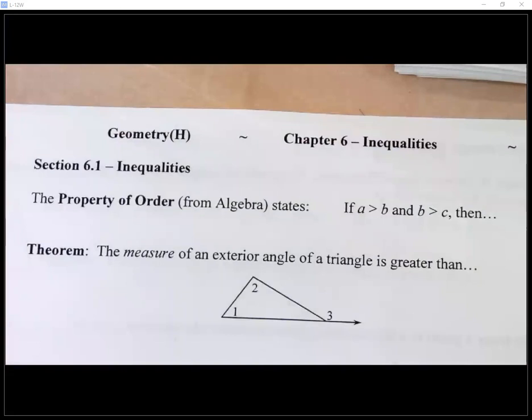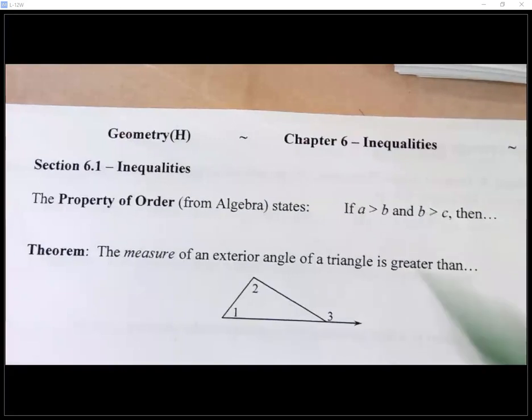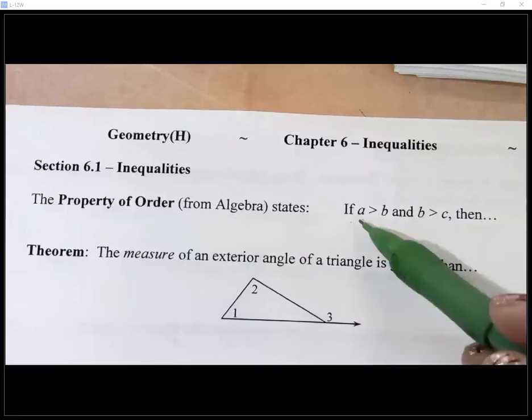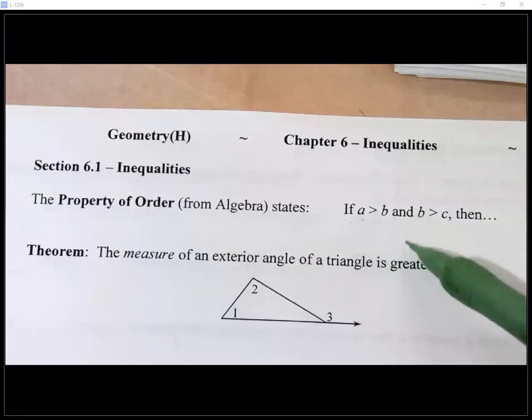Okay everybody, so if we take a look at 6-1, you can see how short it is. So maybe I won't read it in the other notebook. Let's take a look at the top here. This is just something to remember from algebra. If you have three quantities and A is greater than B, and B is greater than C, what could we conclude then?